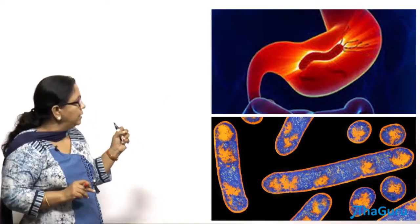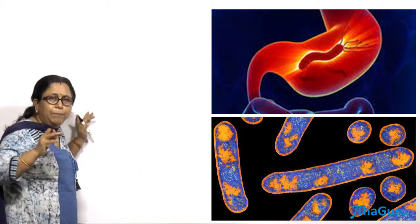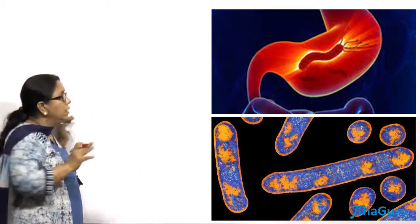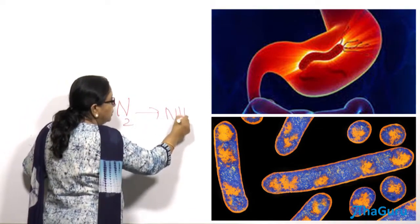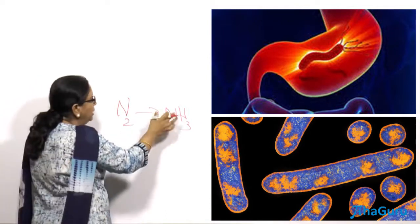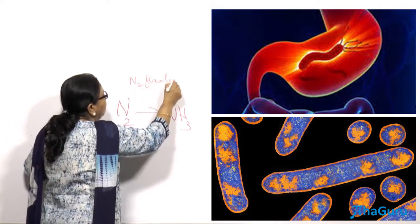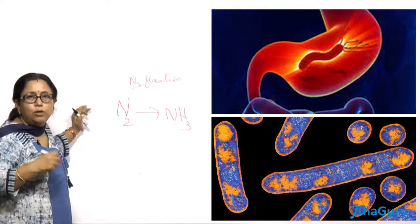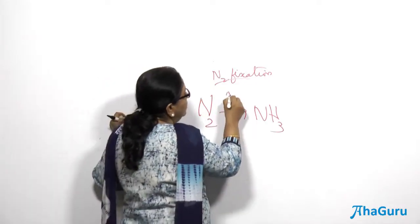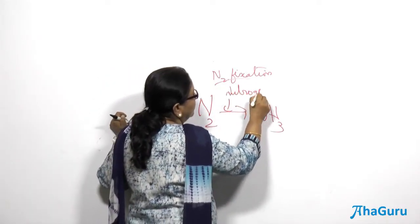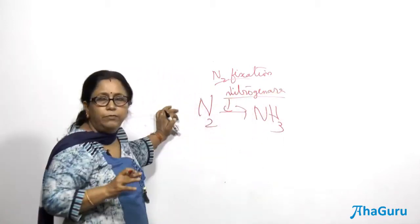Many cyanobacteria are nitrogen fixers, so they play a major role in the nitrogen cycle by converting atmospheric nitrogen into ammonia. This process is called biological nitrogen fixation, and it is carried out by cyanobacteria using a very important enzyme called nitrogenase, which is responsible for atmospheric nitrogen fixation. It is a highly energy-expensive process.